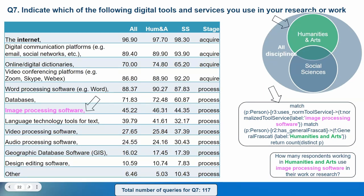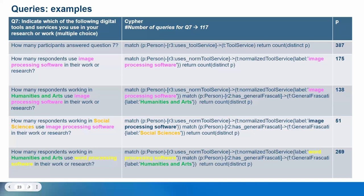This approach allowed us to answer questions such as: how many respondents working in humanities and arts use image processing software? Of 387 participants who answered question 7, 175 respondents overall use image processing software; 138 in humanities and arts; 51 in social sciences; and 269 in humanities and arts use word processing software.